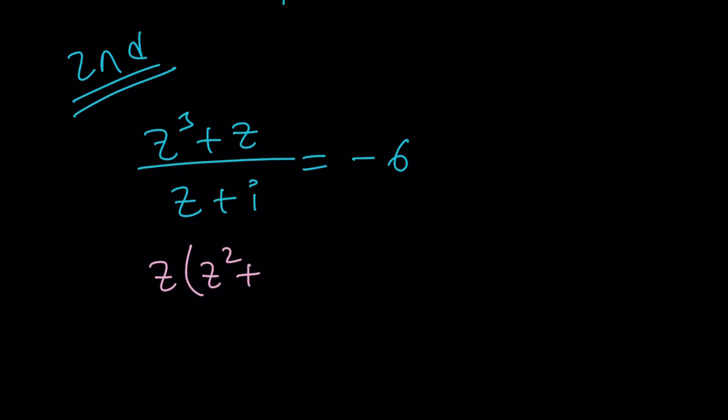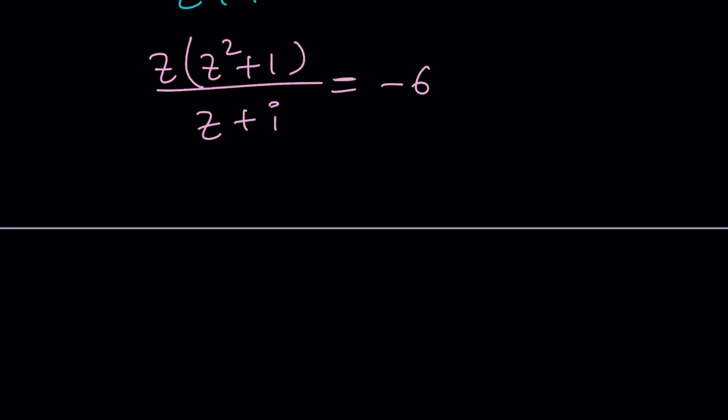The numerator is factorable. I can take out a Z. And after that, this might not look good to you, but it should actually look very good to you. Because Z squared plus 1 is a sum of 2 squares. And it is, it's factorable in the complex world. Or using complex or imaginary numbers. And that's what it is. If you replace one with negative I squared, you'll have a better idea. This will look as a difference of two squares. So, now we can write this as Z plus I times Z minus I. And that is divided by Z plus I. And that's equal to negative 6.